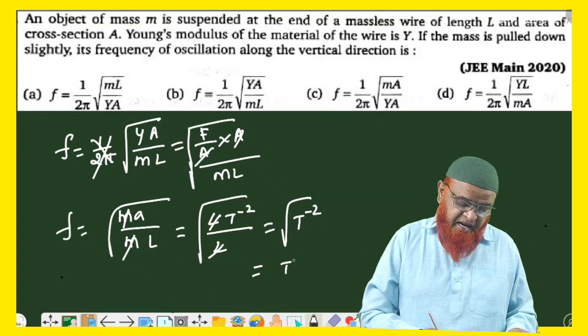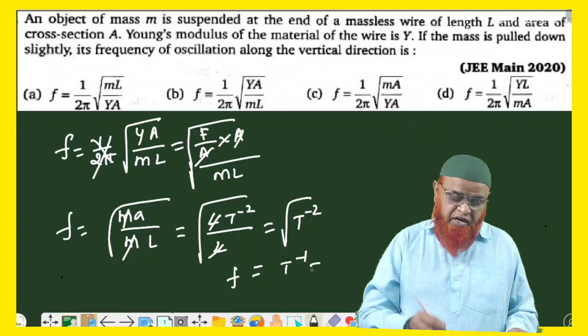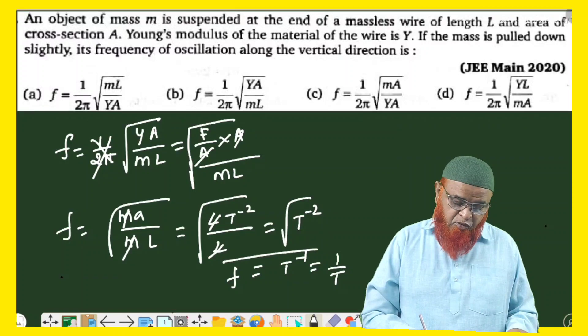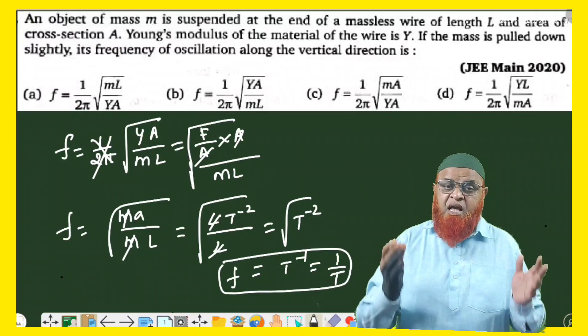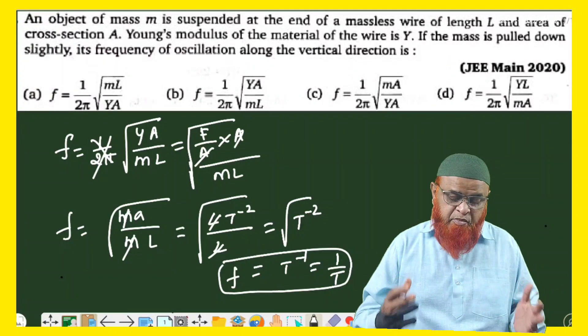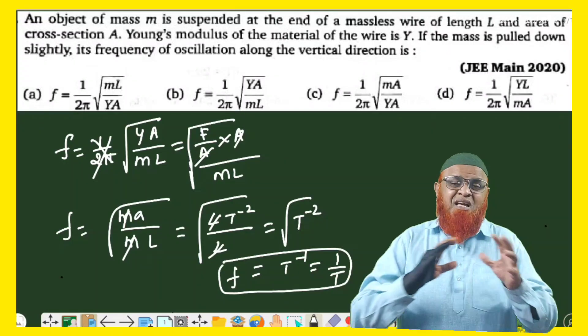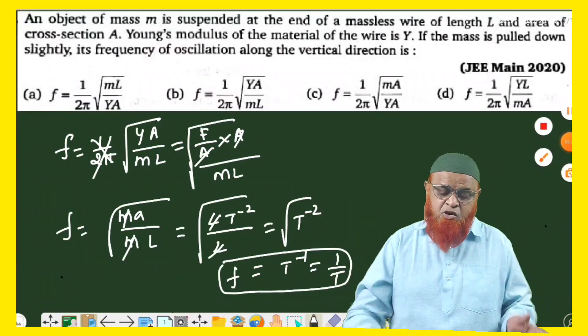Which can be written as T^-1. So therefore T^-1 - you know it is representing 1 by T, and both are going to be same. LHS is going to be equal to RHS because frequency is nothing but reciprocal of time period. In this way you can solve the problem in a fraction of seconds by just going by the method of dimensional formulas. Thank you very much.